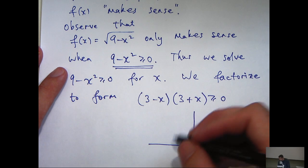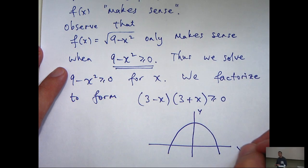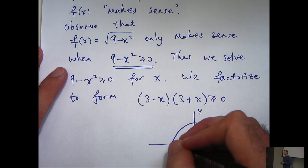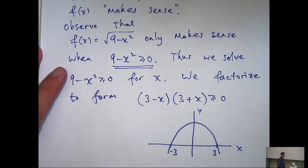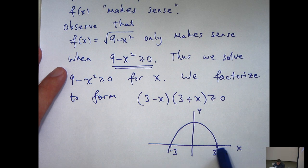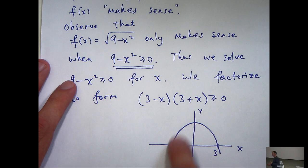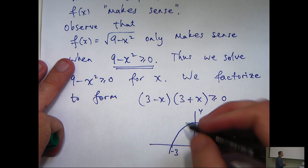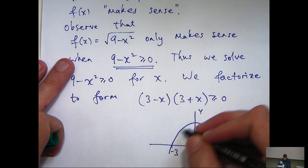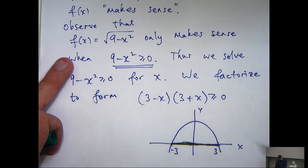This is an n-shaped parabola that cuts the axis. This left hand side is an n-shaped parabola that cuts the axis at minus 3 and 3. So now we have to identify where does this graph lie above or on the x-axis and it's this part here.